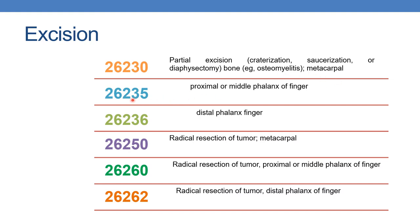Then next is 26230: partial excision, bone, metacarpal. The next is 26235: proximal or middle phalanx of finger. For partial excision of metacarpal bone, report 26230. For partial excision of proximal or middle phalanx of finger, report 26235. Radical resection of tumor, metacarpal, is reported with 26250. Proximal or middle phalanx of finger is reported by 26260. Distal phalanx of finger is reported by 26262.